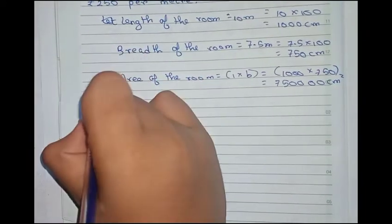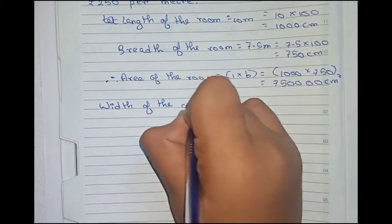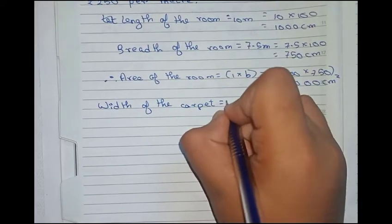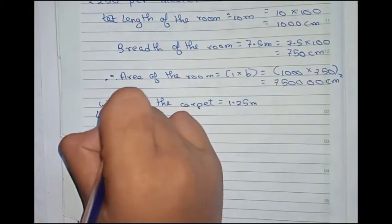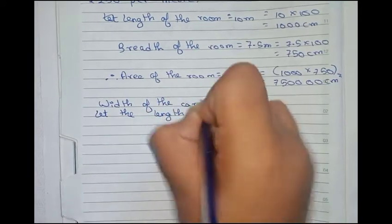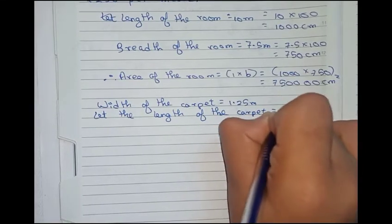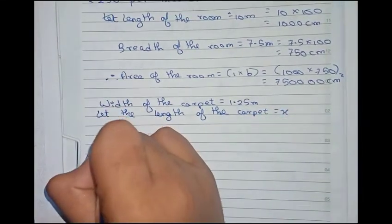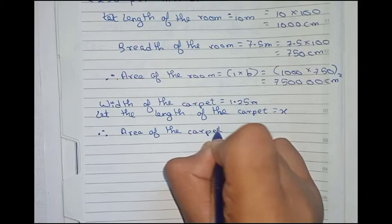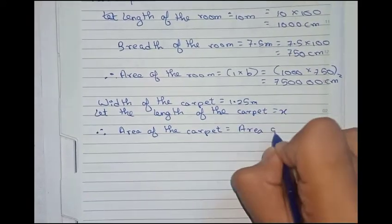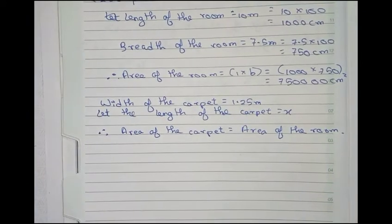Now write. Width of the carpet equals to 1.25 meter. Now let the length of the carpet equals to x. Therefore you can write area of the carpet is equal to the area of the room, as it is given in the question that the room has to be fully covered with the carpet.